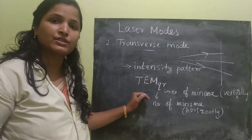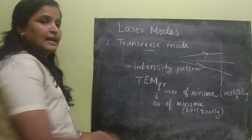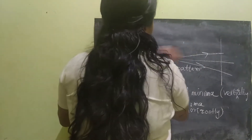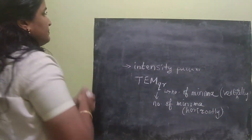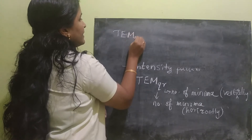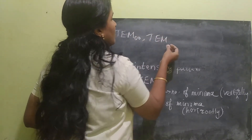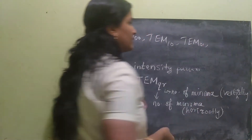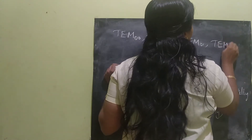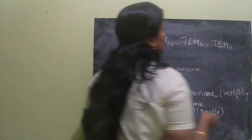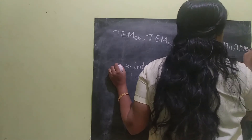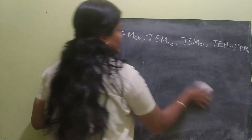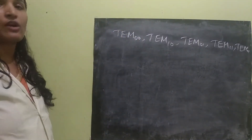There are many sub-modes of transverse mode. Some of them are TEM00, TEM10, TEM01, TEM11, TEM21, and so on. Let's draw them one by one.